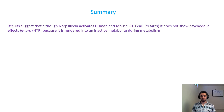The summary of the paper is as follows: the results suggest that norsilocin activates human and mouse serotonin 2A receptor in vitro, as seen in the GQ calcium flux bioassay. It does not show psychedelic effects in vivo — as seen in the head twitch response — because it is likely rendered into an inactive metabolite during metabolism. I did really like this paper; however, I just wish they had tested the other compounds both in vivo and in vitro.